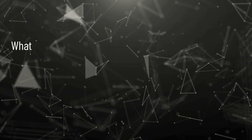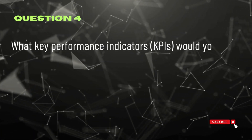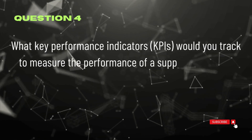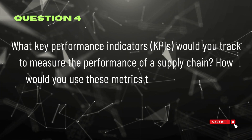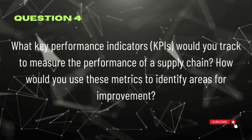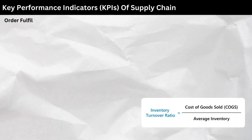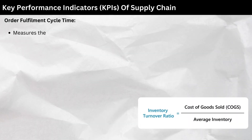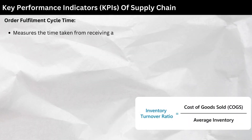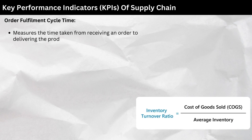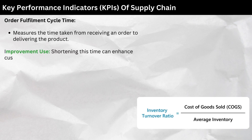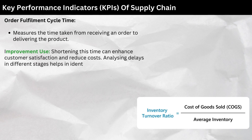Question 4: What key performance indicators (KPIs) would you track to measure the performance of a supply chain? How would you use these metrics to identify areas for improvement? Key KPIs — Order fulfillment cycle time: Measures the time taken from receiving an order to delivering the product. Shortening this time can enhance customer satisfaction and reduce costs. Analyzing delays in different stages helps in identifying bottlenecks.